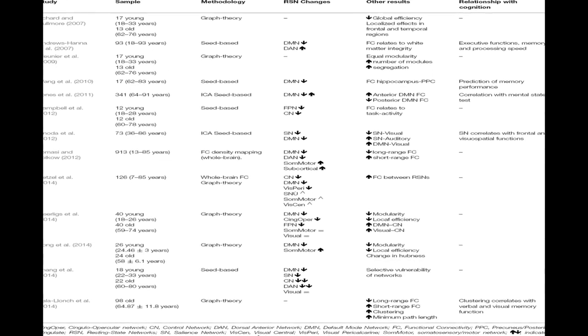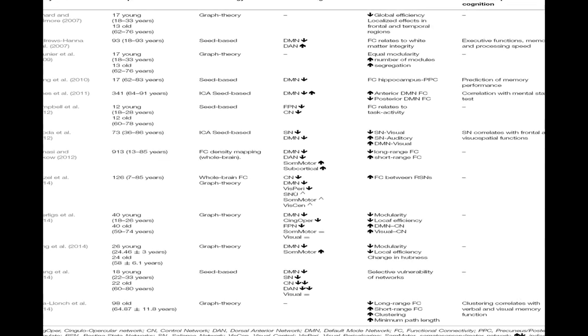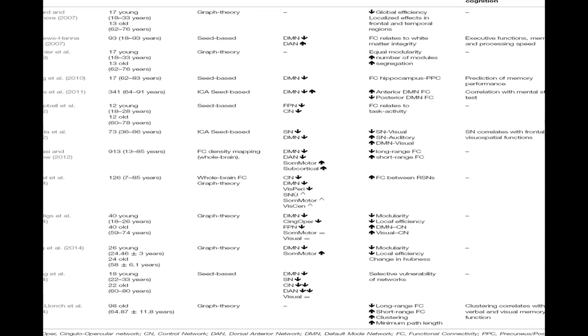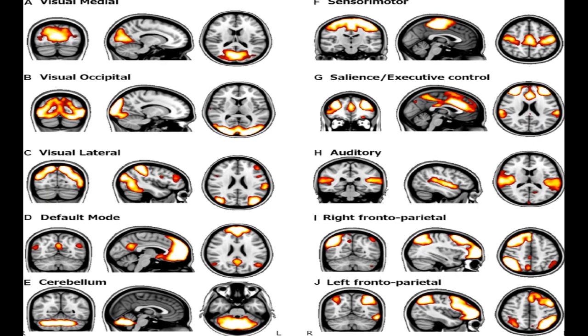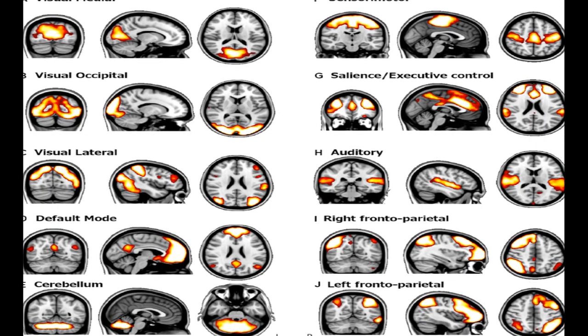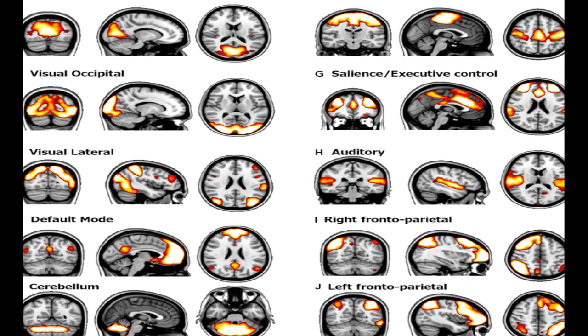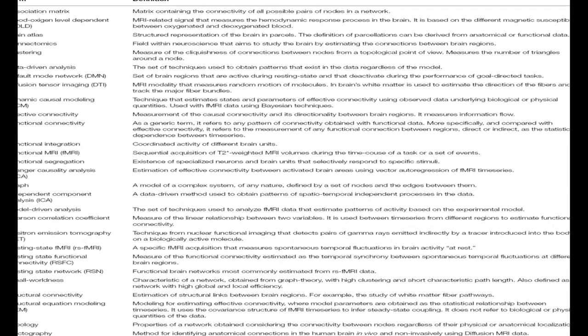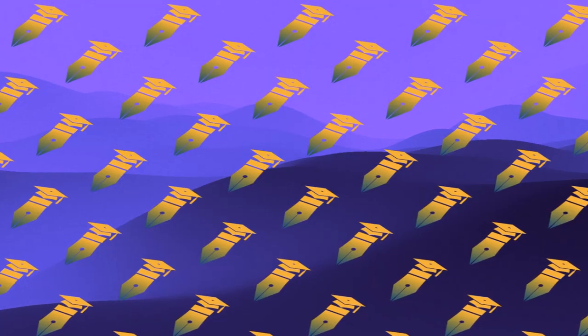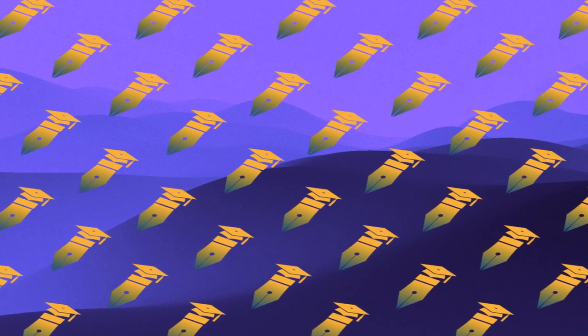Healthy aging (HA) is associated with cognitive decline, which has been studied using fMRI. A consistent finding is that healthy older adults present higher activity levels in some brain regions during cognitive tasks, but disrupted connectivity.